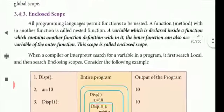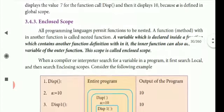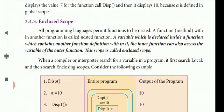Next is enclosed scope. All programming languages permit functions to be nested. A function within another function is called a nested function. A variable which is declared inside a function which contains another function definition within it — the inner function can also access the variable of the outer function. This scope is called enclosed scope.